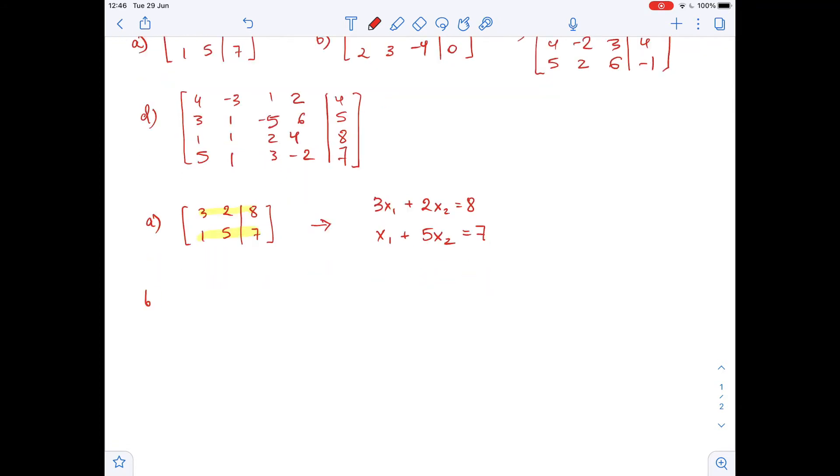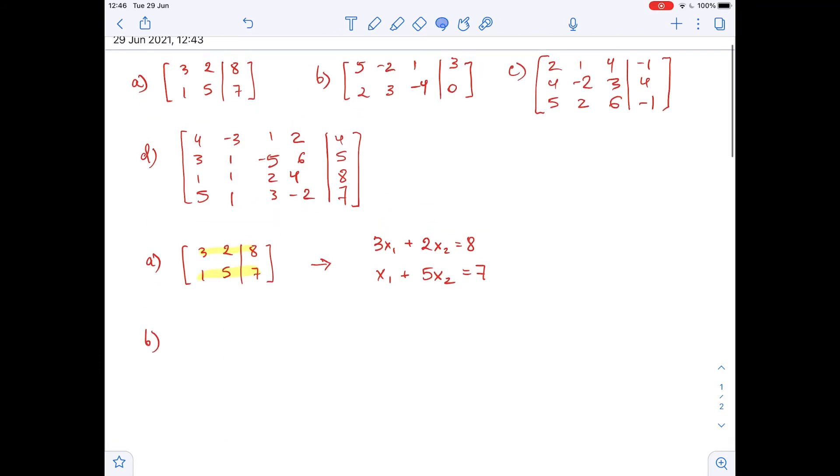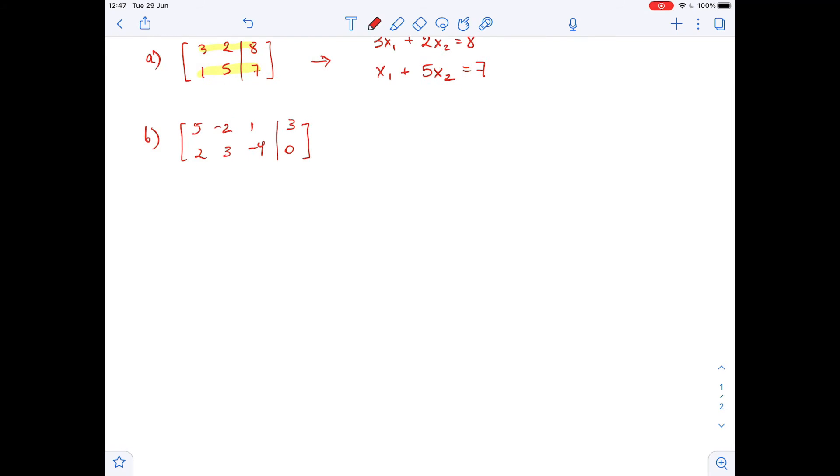Now let's look at matrix b. So here again we have two rows, so we will have two equations. But the number of columns here on the left side of the matrix is 3, so that means we will have three variables. So we got that 5x1 minus 2x2 plus x3 equals 3, and here 2x1 plus 3x2 minus 4x3 equals 0.